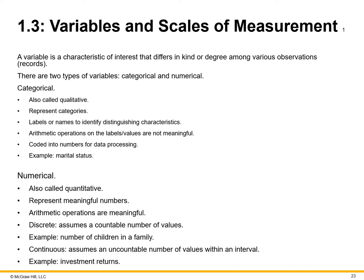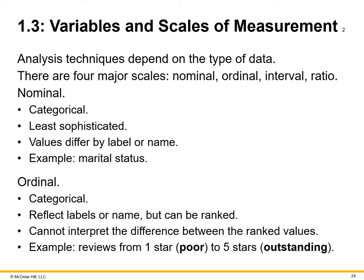Numerical values are quantitative — they represent meaningful numbers derived from arithmetic operations and truly have a numerical value. For example, the number of children in a family is a concrete fact, and the amount of money someone has at a certain point in time is a numerical value — it is a point in time that doesn't change as much based on the analysis at that time.